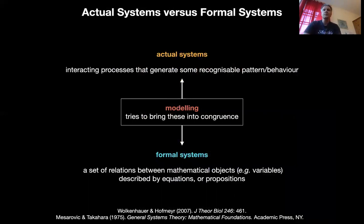I want to remind you that we said there are actual systems, patterned processes, interacting processes that generate some recognizable pattern or behavior. There are formal systems, sets of relations between mathematical objects, for example variables that are described by equations and propositions, and the act of modeling is trying to bring them into congruence in some way that depends, remember, on the motives and the questions of a modeler as an agent.